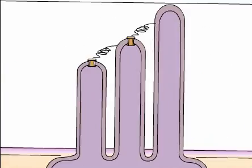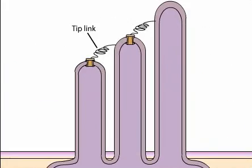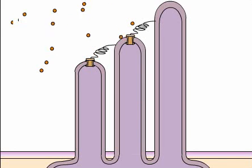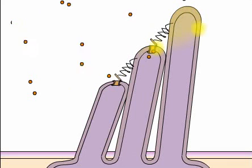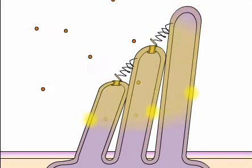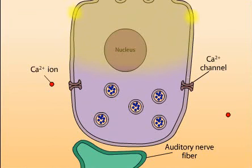Fine filamentous structures known as tip links run in parallel to the plane of bilateral symmetry, connecting the tips of adjacent stereocilia. The tip links provide the means for rapidly translating hair bundle movement into a receptor potential. When the hair bundle is deflected toward the tallest stereocilia, cation-selective channels open near the tips of the stereocilia. Opening of the channels causes an influx of potassium ions and a rapid depolarization of the entire hair cell.